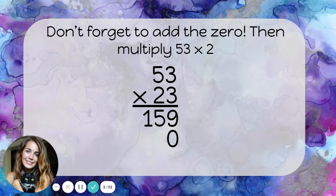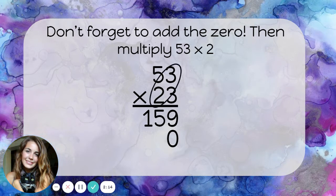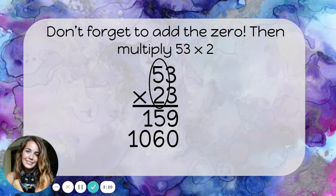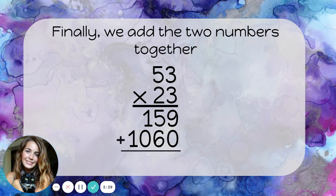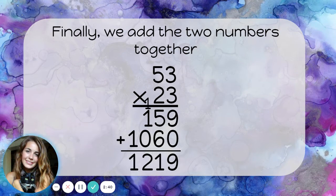Now let's just focus on multiplying fifty-three times two. We'll put the answer to that right next to the zero. So first we'll multiply two times three — that's six. And then we'll multiply it times the five — that's ten. Notice how we always multiply by the ones place first, and then the tens place. The last step is to add these two numbers together. Fifty-three times twenty-three is one thousand two hundred nineteen.